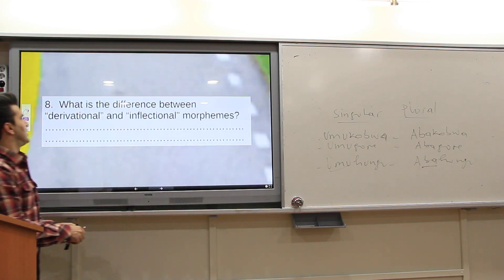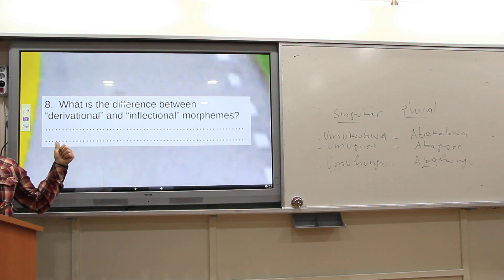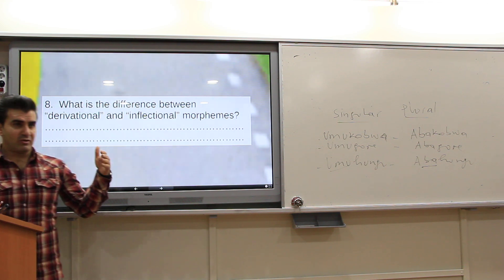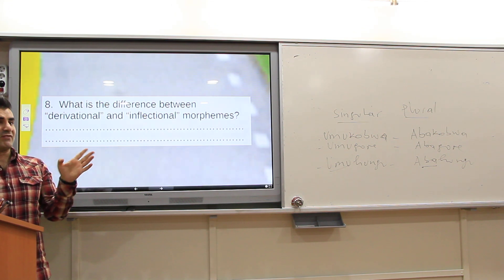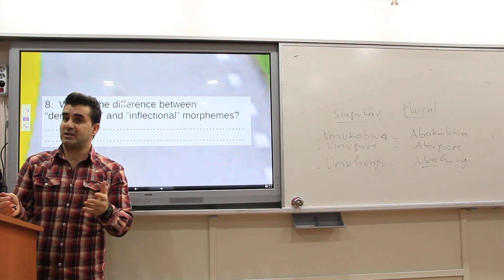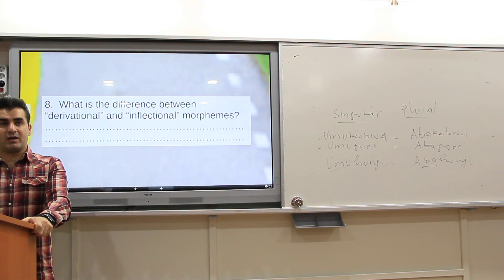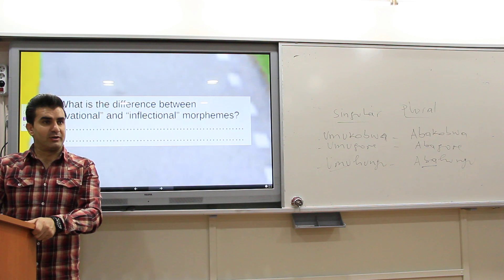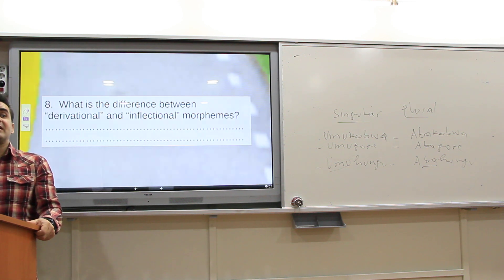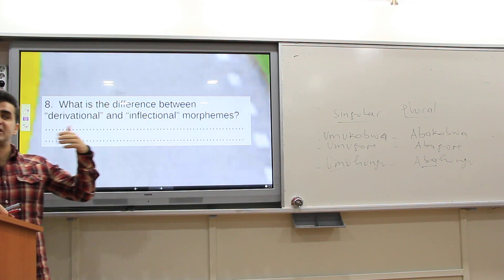What is the difference between derivational and inflectional morphemes? A derivational morpheme changes the grammatical category of the form, whereas an inflectional morpheme does not change its category. For example, 'book' → 'books': the inflectional '-s' does not change its category. Similarly, 'older' is still an adjective.